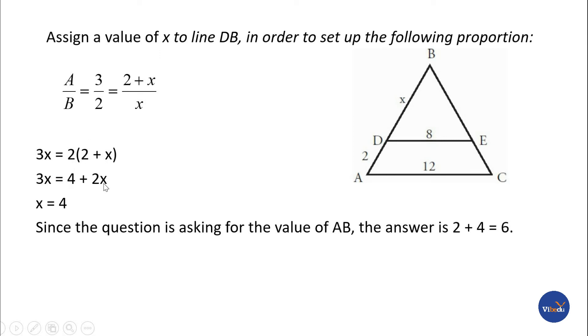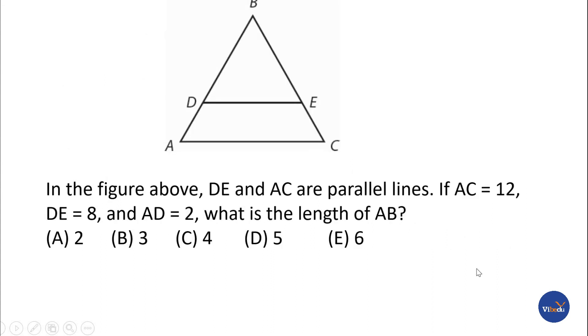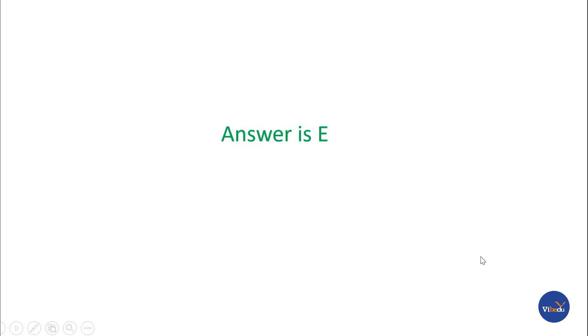Solving, X equals 4, which is the value of DB. Since we want AB, it's 4 plus 2 which equals 6. So the correct answer is option E, which is 6.